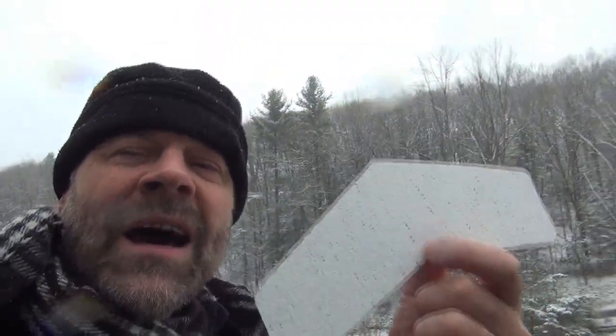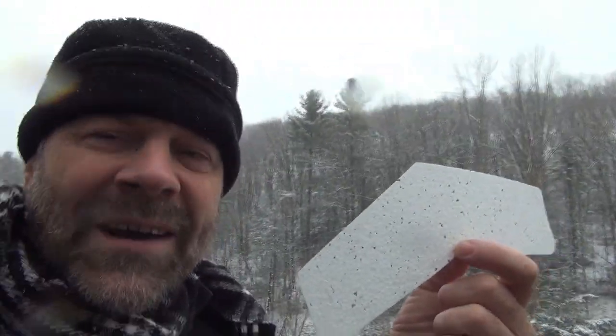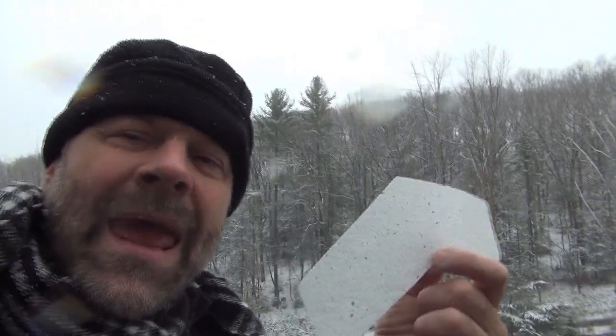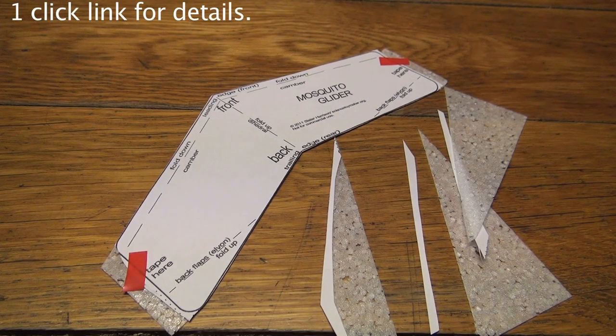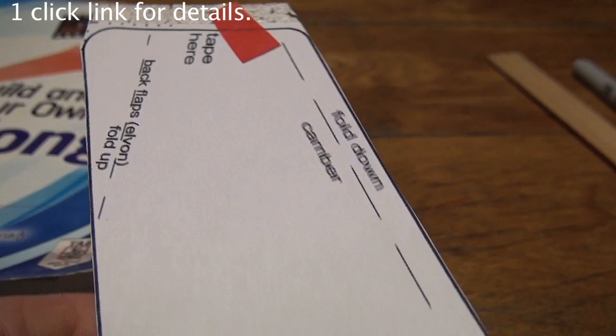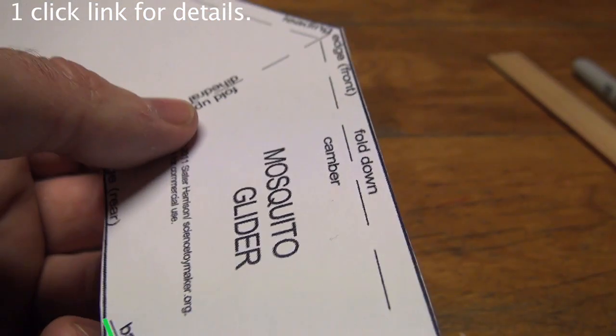Hi, it's Slater the Science Toymaker. If you use shape-cut foam for your walk-along gliders, you can save time and paper. But how are you going to make the folds?